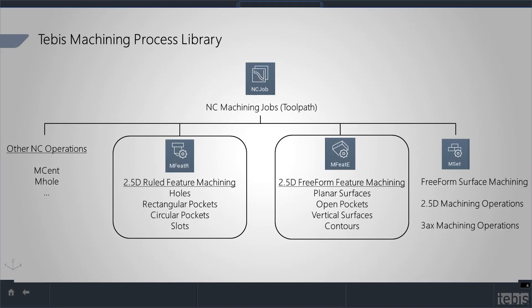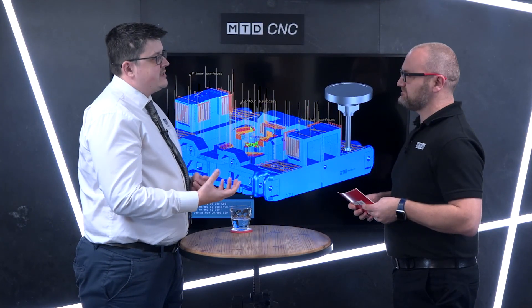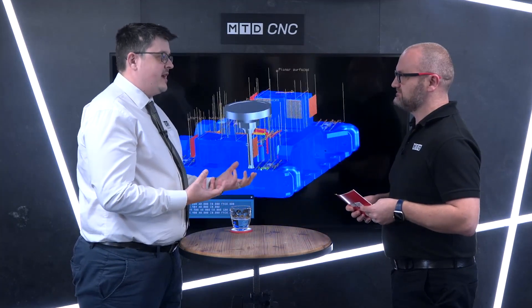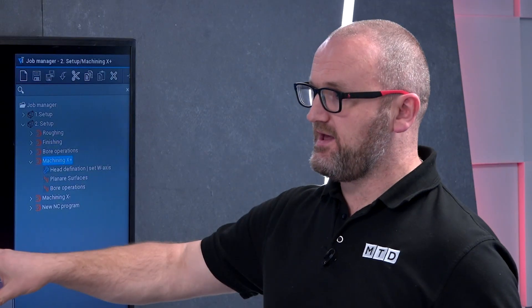Like all the automation in Tebis, it's a multi-layered process — we have features, NC sets, and templating all working together to create a fully automated programming process. One of the real strong points with NC sets is that Tebis is able to make decisions for you using variable programming and conditional statements. For example, producing an M14 hole where your biggest drill is a 10mm drill — Tebis will know to use that drill to remove material, then re-machine using an end mill before it taps, all using the same automation. And for an M10 hole where you've got an 8.5mm drill, it knows it doesn't need to do the milling, so it leaves that operation out.